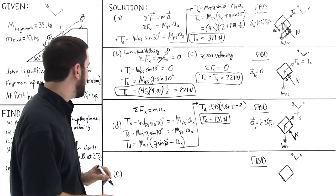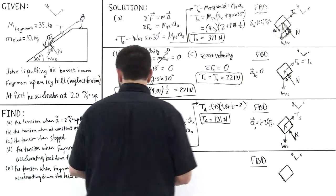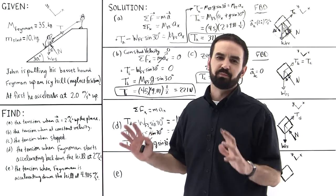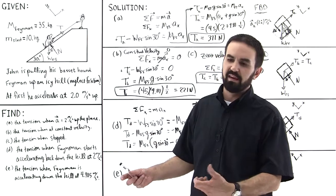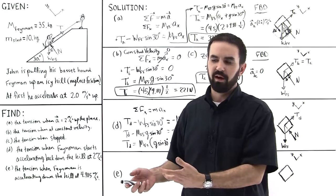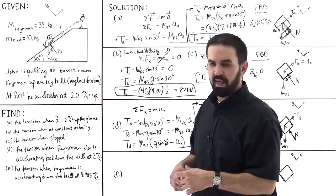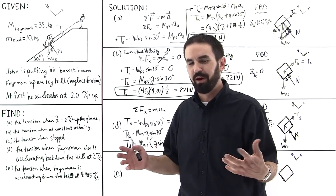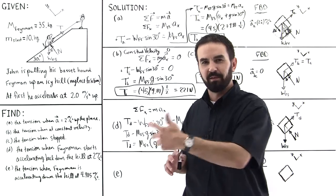Okay. Then for part E, now John is just completely, he just collapses, and he just, the rope is just going freely, you know, away from him. And Feynman, and of course we can see right away that the tension is going to be 0. But let's do an analysis and see how the math will tell us.